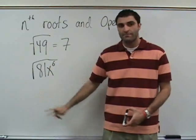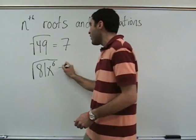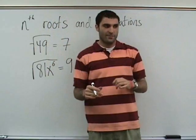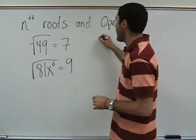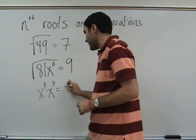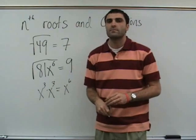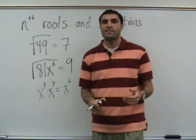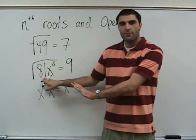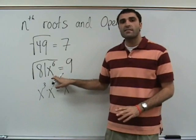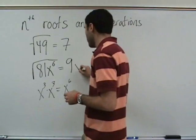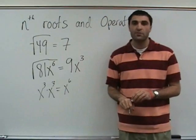What times itself is 81? Nine. X to the third times x to the third equals x to the sixth. Correct. Square root of 81 is nine. Square root of x to the sixth — that's x cubed. So that's cube root. We're going to broach something new today.